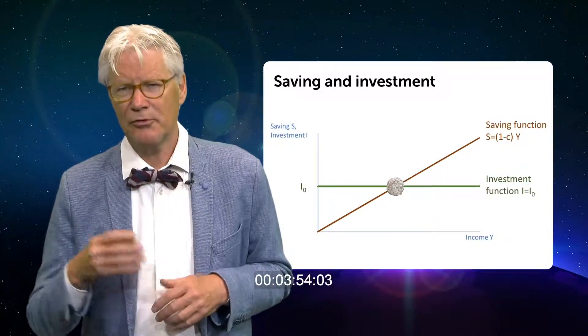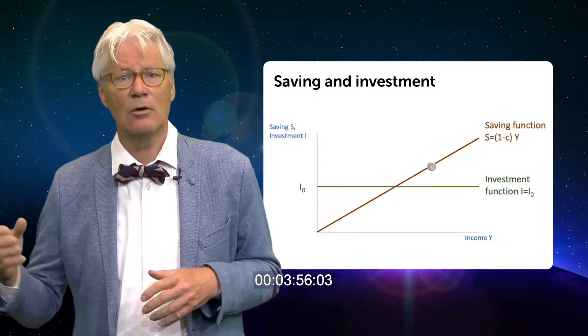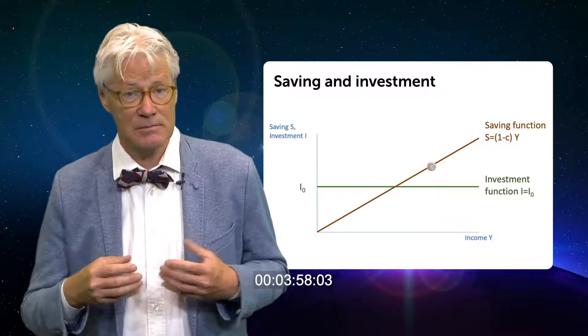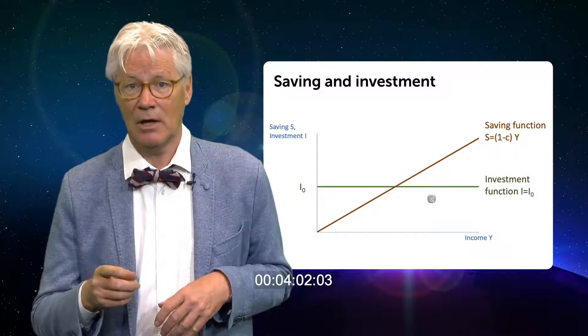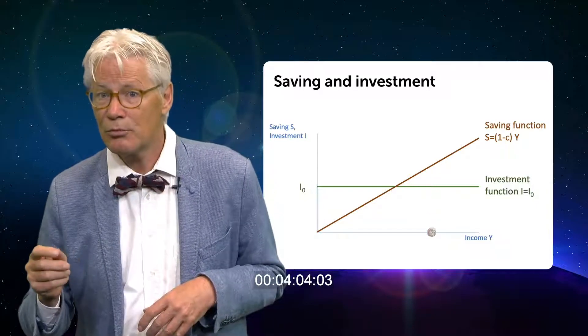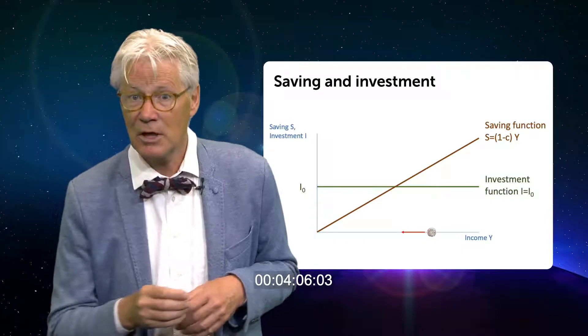To solve this problem first think about a point to the right of ISS. Saving would exceed desired investment and firms want to reduce production. And we move to the left.